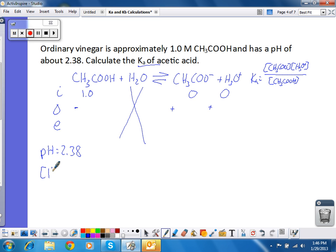So the equilibrium concentration of hydronium ion in solution is equal to 10 to the negative pH. So that is equal to 4.2 times 10 to the negative third molar. That's my equilibrium concentration of hydronium. So that goes here.